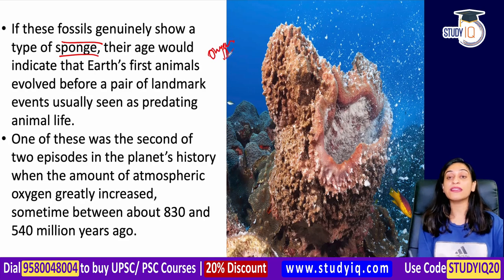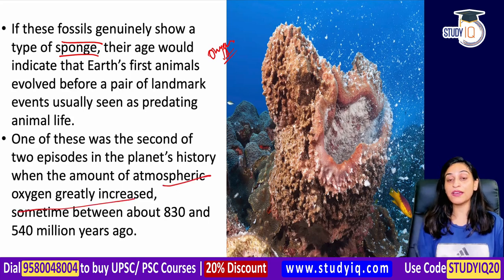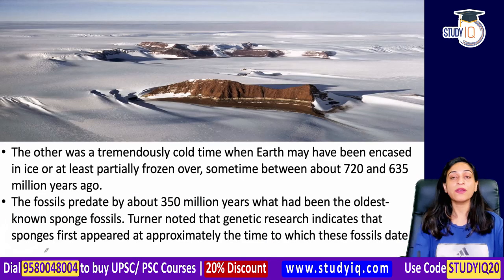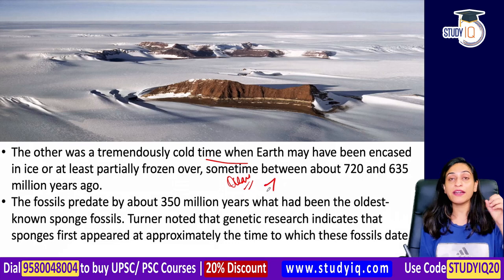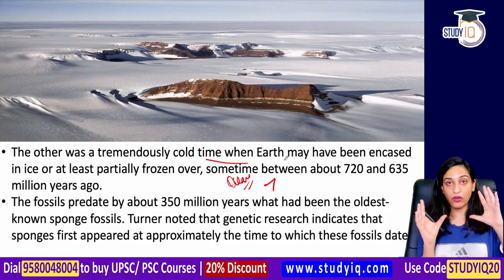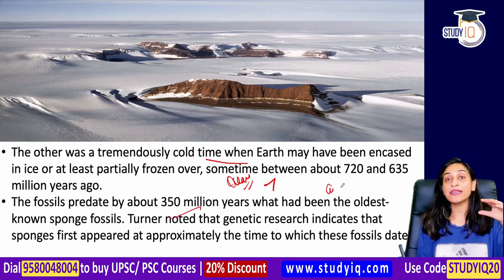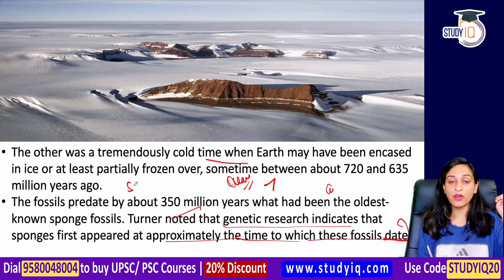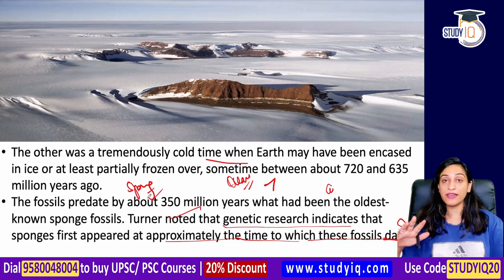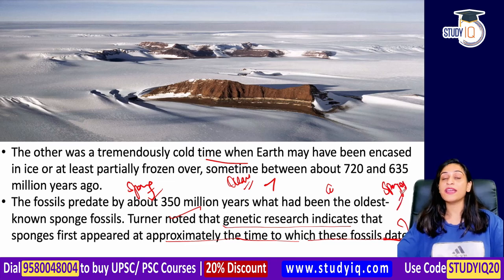At that time, oxygen was not as present as today. There were two episodes in the planet's history when oxygen increased — from 830 to 540 million years ago — and the Earth was very cold with limited ocean coverage. This means our knowledge will change: animals may have survived with much less oxygen. Turner noted that genetic research also indicates sponges first appeared at approximately the time these fossils date to.